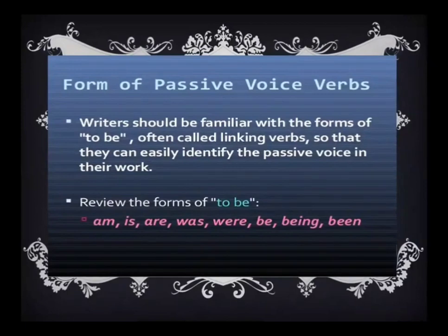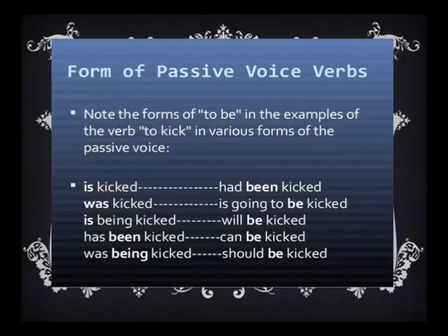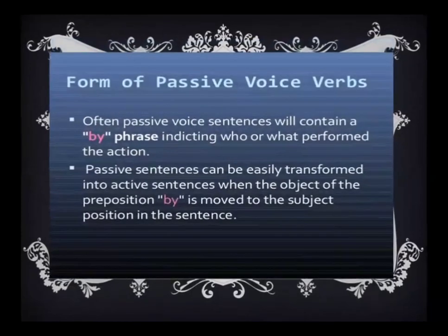Writers should be familiar with the forms of 'to be,' often called linking verbs, so that they can easily identify the passive voice. Is, am, are, was, were — these are the forms of 'to be.' Note the forms of 'to be' in examples of the verb 'to kick' in various forms of passive voice: is kicked, was kicked, is being kicked, was being kicked, has been kicked, had been kicked, will be kicked, is going to be kicked, can be kicked, should be kicked. Often, passive voice sentences contain a 'by' phrase indicating who or what performed the action. Passive sentences can be easily transformed into active sentences when the object of the preposition 'by' is moved to the subject position.